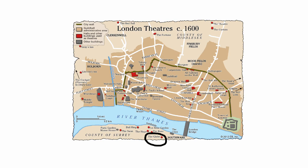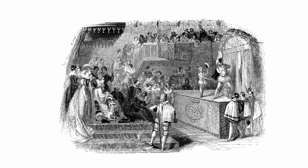While London boasted an array of theatres like The Rose, The Curtain and The Fortune, it was The Globe which excited the greatest interest among theatregoers across the capital. It was home to the revered company for whom Shakespeare wrote and acted, Lord Chamberlain's Men. Such was the arrangement that Shakespeare was entitled to 10% of all proceeds as a shareholder in the company, which formed the basis of his own personal wealth.